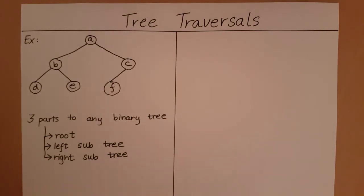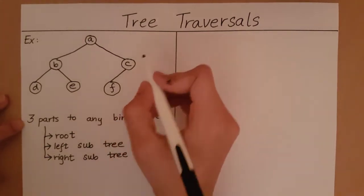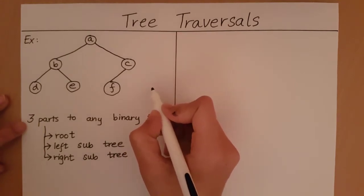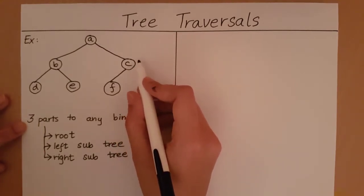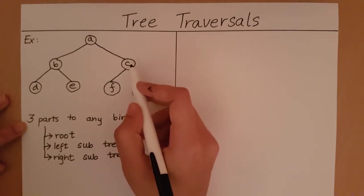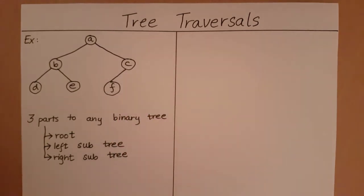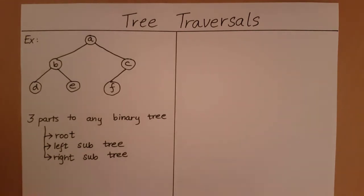If a node does not have a right subtree, then the right subtree of that node is equal to null. For example, C does not have a right child, so the right subtree of the subtree rooted at C is null. Leaf nodes don't have a left child or a right child, so leaf nodes will have a null left subtree and a null right subtree. With this concept in mind, let's take a look at the first method we can use to traverse this binary tree.